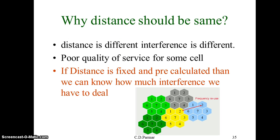We also need to understand why the distance between two co-channel cells should be the same. If distances are different, interference levels will differ, leading to poor quality of service because we cannot predict the interference level in each cell. If the distance is fixed and pre-calculated, we know how much interference we have to deal with and can provide solutions accordingly.